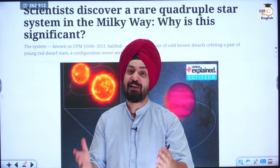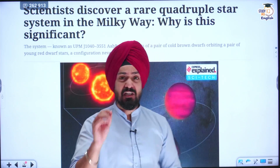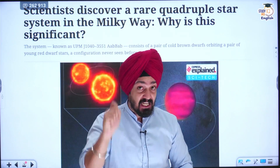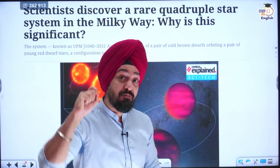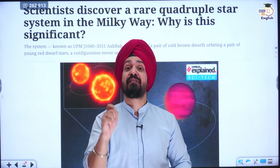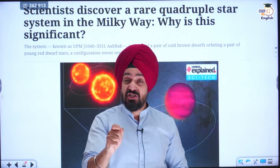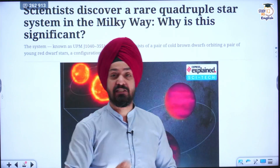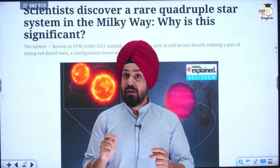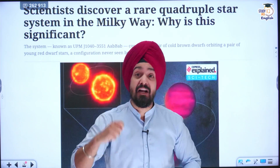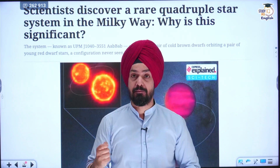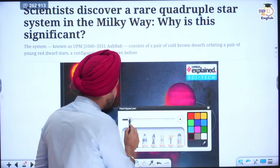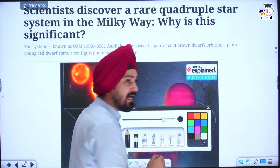The Milky Way galaxy, whose Hindi name is Akash Ganga. It was a very rare star system which has been discovered for the first time by scientists. They have never seen such a rare star system in the Milky Way galaxy. This star system is called a quadruple star system, and in this star system there were four objects which are bound together.